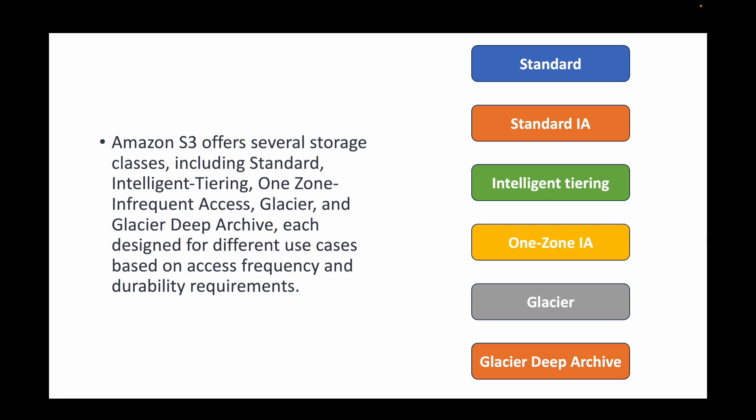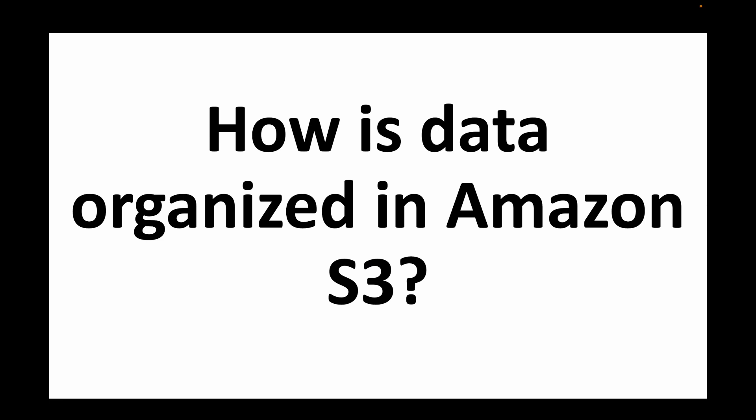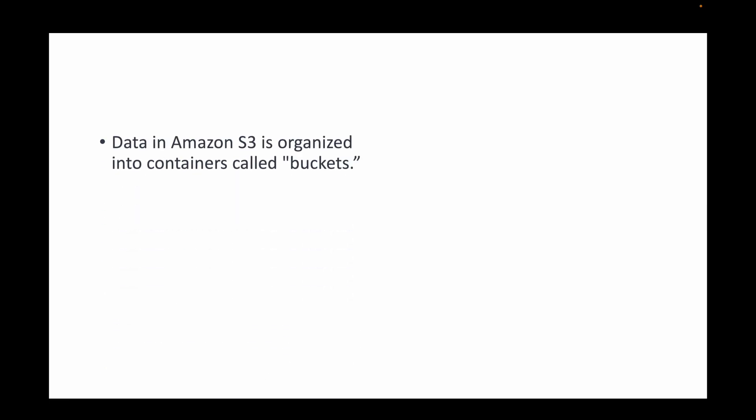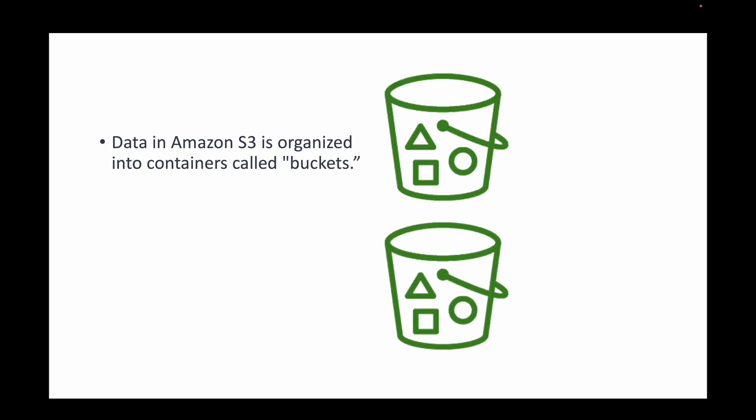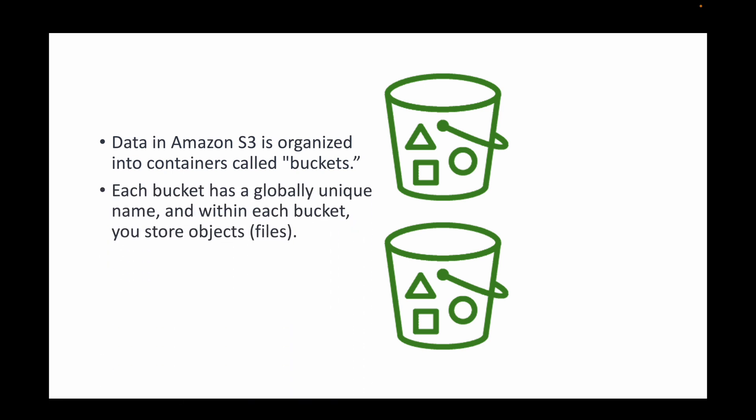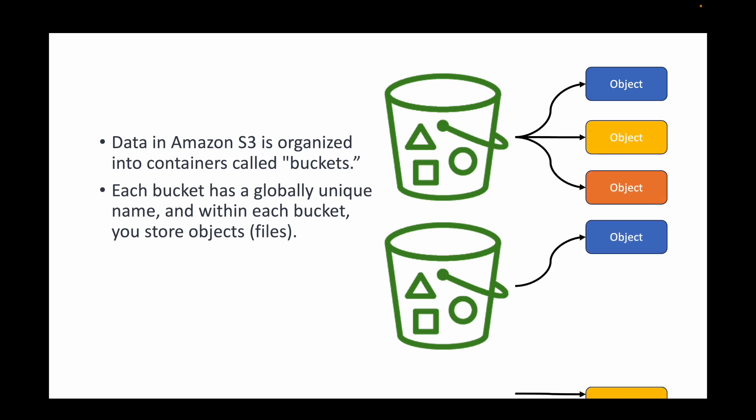The next question is: how is data organized in Amazon S3? Data in S3 is organized into containers called buckets — also referred to as S3 buckets. These buckets are containers for the data you want to store. Within a bucket, each file or piece of data is called an object. Each bucket must have a globally unique name, so no other AWS account can use the same bucket name.